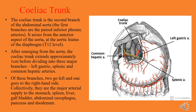One of these branches goes to the left-hand side and two go to the right-hand side. The celiac trunk is the major arterial supply of your stomach, spleen, liver, gallbladder, abdominal esophagus, pancreas, and duodenum.